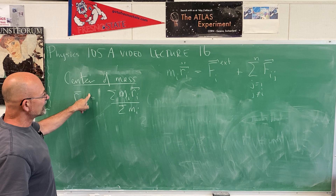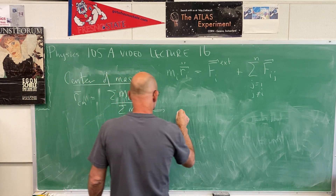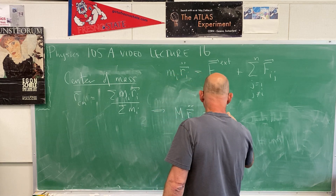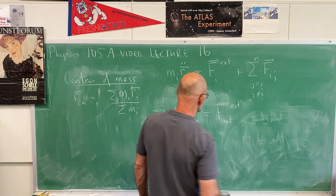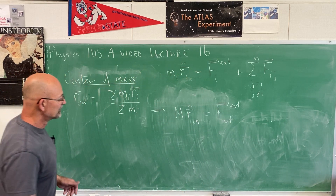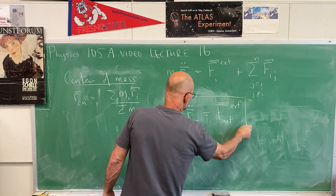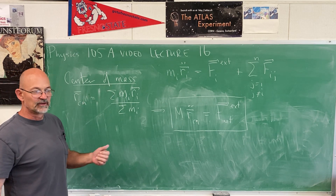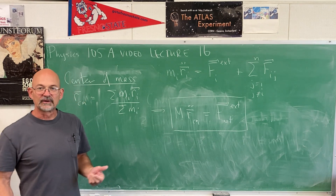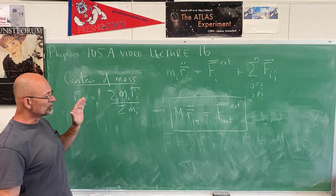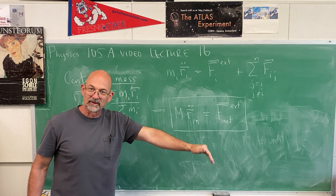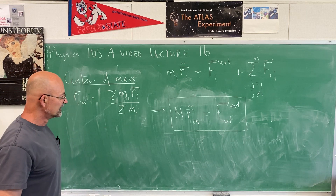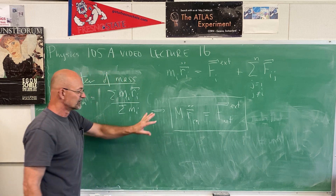With the center of mass defined, we found that total mass times the acceleration of the center of mass equals the net external force. So if you throw some irregularly shaped object — a table or a bicycle — the center of mass moves along the parabolic trajectory. The object itself can be tumbling and twisting and turning, but its center of mass follows that trajectory. We have that formally in this expression.